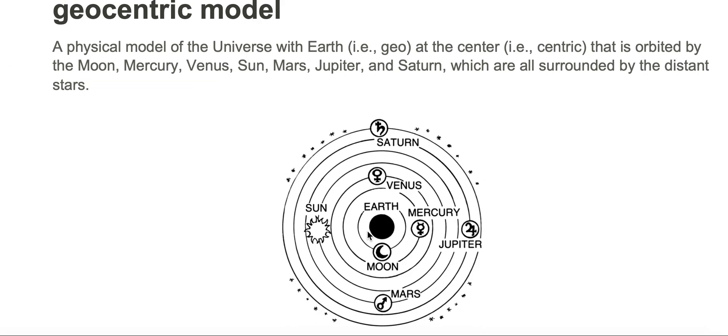And thus the geocentric model is a geo or Earth-centered model with these objects traveling in orbits around the Earth, except for the distant stars. The distant stars are painted in the canvas of space.